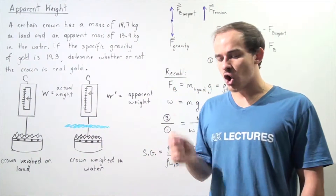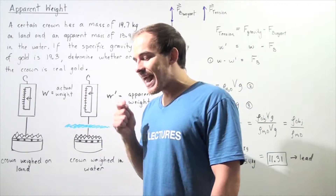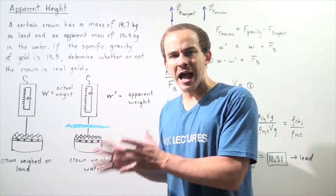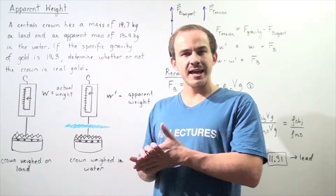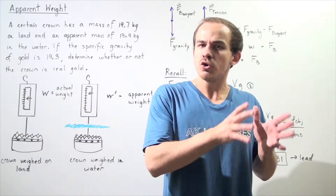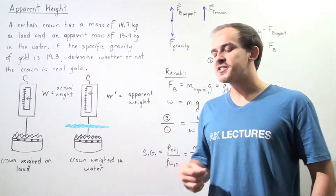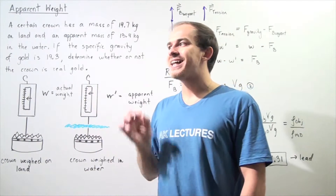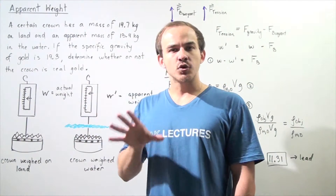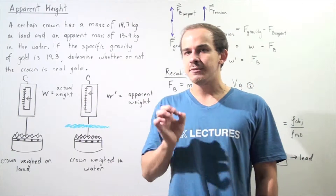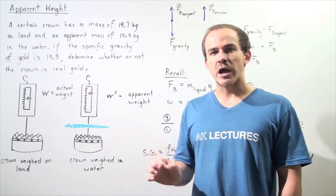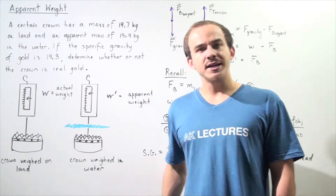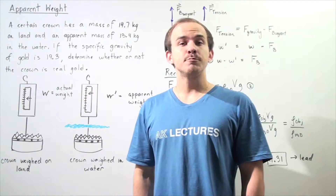Is the crown real gold? Well, one way we can answer this question is by comparing the specific gravity value of that crown to the specific gravity value of pure gold obtained from experimental results. We know the specific gravity of gold is 19.3. So, if the specific gravity of the crown is also 19.3, the crown is pure gold. But if it's some other value, the crown is not pure gold.